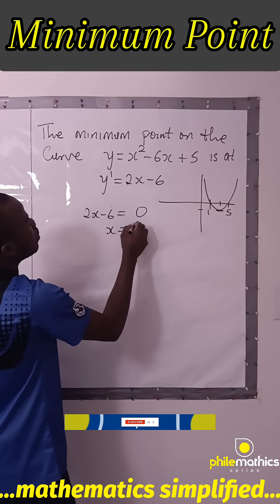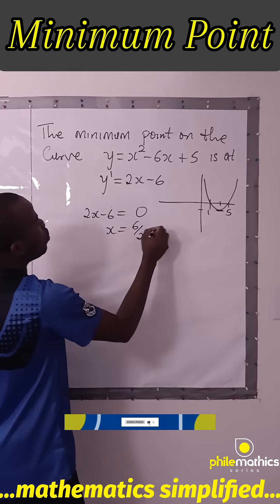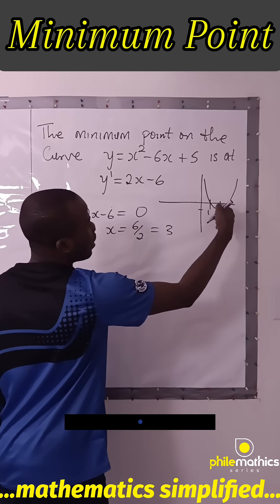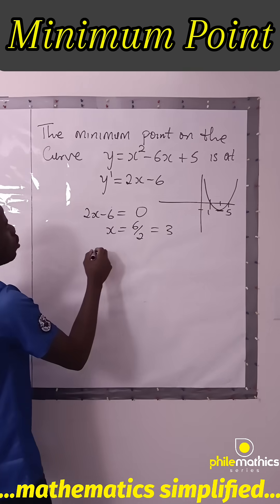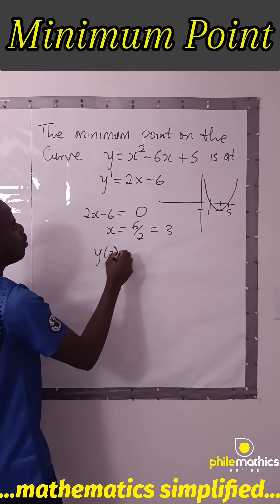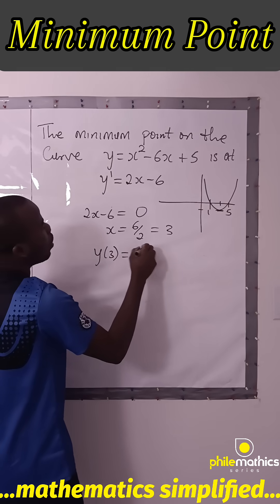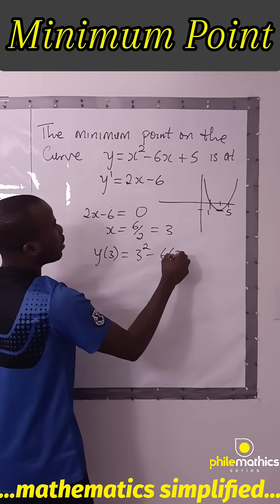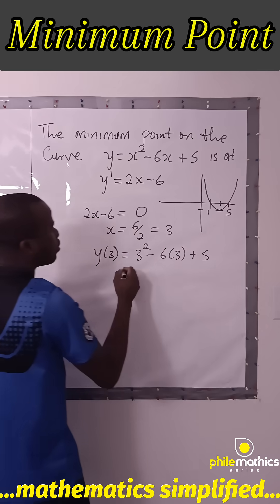And x will be 6 over 2 which is 3. So this is 3. We're going to look for the corresponding y, so we'll look for y at 3, which will be 3 squared minus 6 times 3 plus 5.